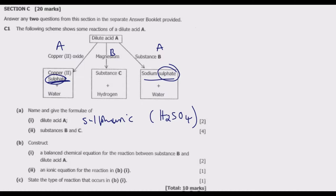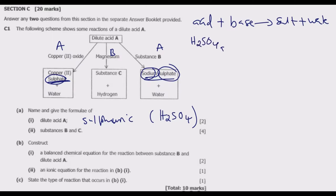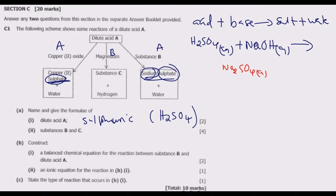This is a standard case where we react an acid plus a base to give a salt plus water. The salt contains sodium, so since it contains sodium, in the case of sulfuric acid this should be sodium hydroxide — because when you react sodium hydroxide with any acid you get a salt and water. So substance B is sodium hydroxide (NaOH), in the aqueous state, and the product is sodium sulfate (Na₂SO₄), aqueous, plus water as a liquid.